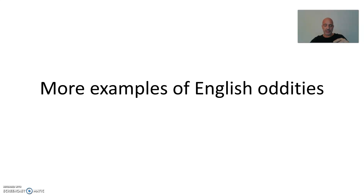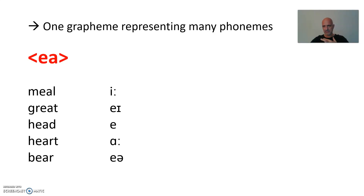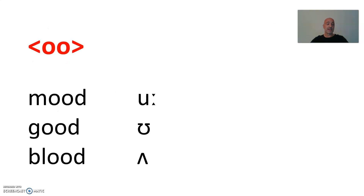More examples of English oddities. One grapheme denoting many phonemes — for the EA grapheme, I came up with five altogether. EA usually gives a long vowel as in 'meal'. However, there is 'great' (A), 'head' (E), 'heart' (A), 'bear' (air) — five different pronunciations. And look at the double-O spelling: 'mood' is the usual long vowel, but there's 'good' with a short U, and 'blood' with a central vowel. How did that come about?